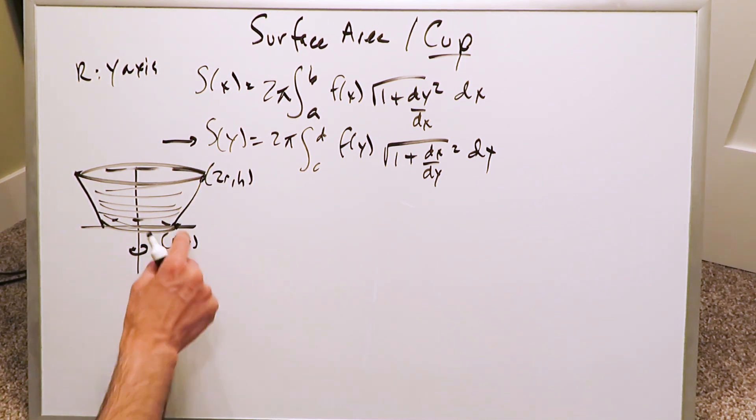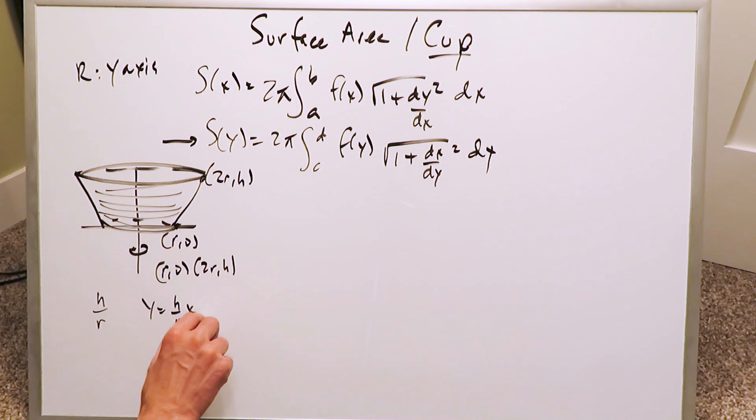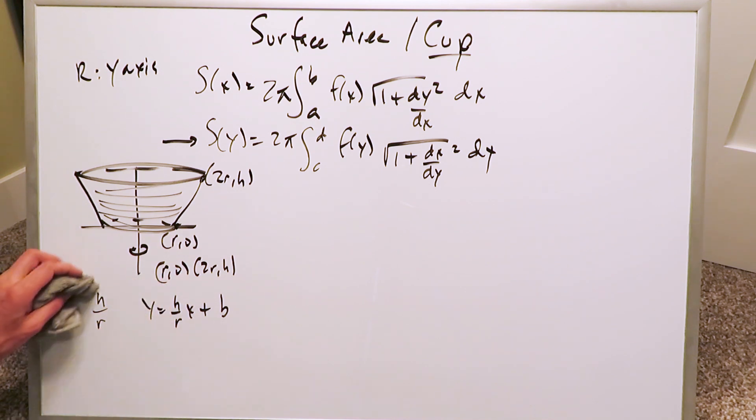Your equation is what? You would look at the slope of this right here. You have r, 0, and then you have 2r, h. What's the slope? It's h over (2r minus r), and that's h/r. y equals (h/r)x plus b. What's your b, your y-intercept? This line here would come and intercept somewhere over here.